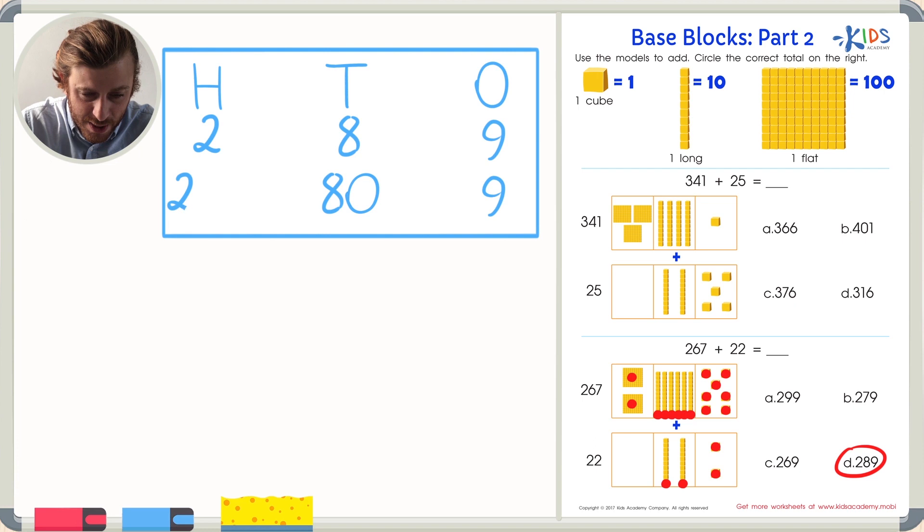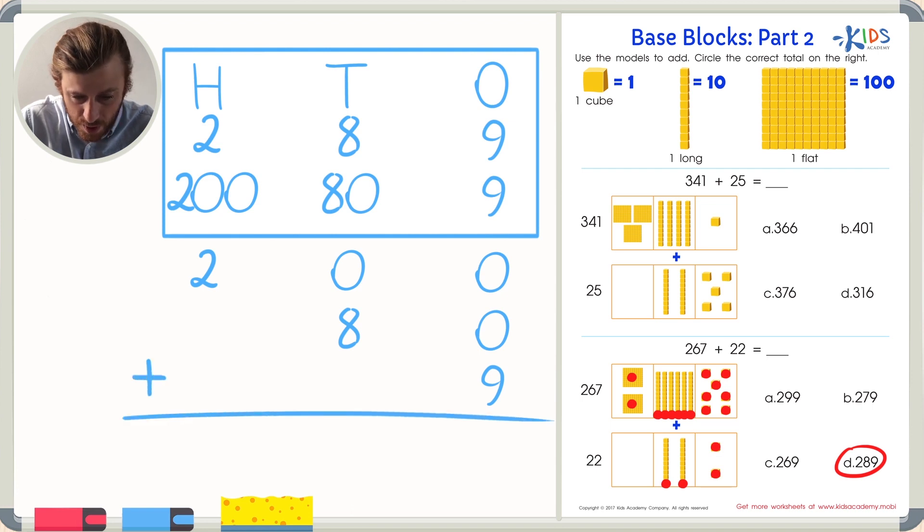So again, we can add our 200 with a two in the hundreds place, plus 80 with eight in the tens place, plus nine with the nine in the ones place. Add these numbers together. Zero plus zero plus nine is nine. Zero plus eight is eight. And two plus nothing is two. Giving us 289 for a second time. I'm pretty sure this is our answer.